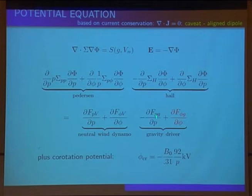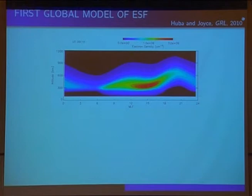This is the neutral wind term that gives the dynamo and the pre-reversal enhancement in the global behavior of the electrodynamics. And this is the driver gravity. And caveat, we have an aligned dipole. So in this planet, the magnetic axis is aligned with the spin axis. And so here we have the ionosphere.